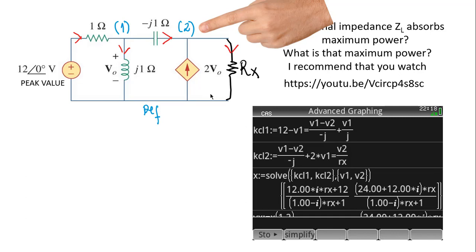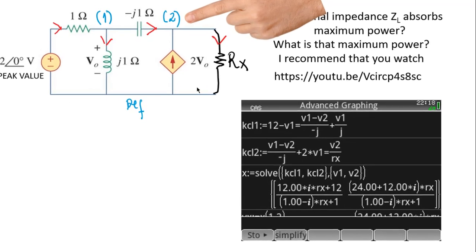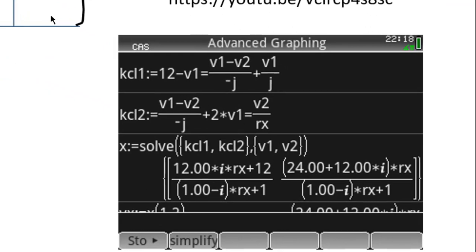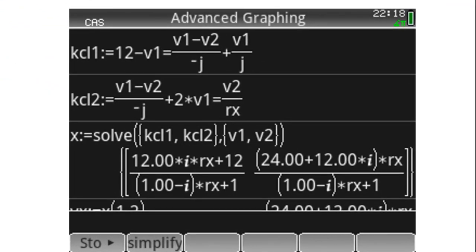We solve the system of equations and get V1 and V2. V2 is the one we're interested in because that is the voltage across the external resistor R_X, and V2 is a function of R_X as it should be. Let me extract that voltage and put it in the variable V_X.